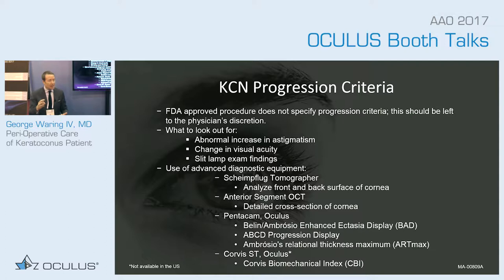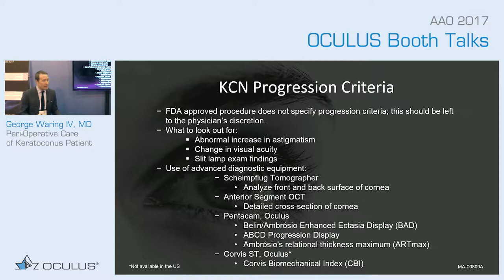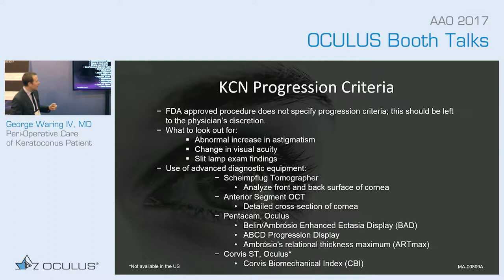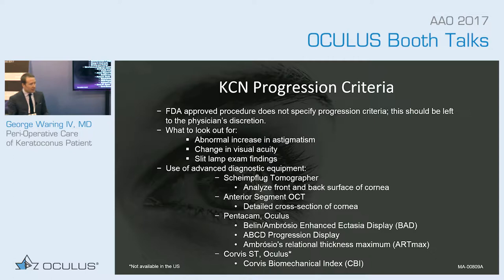We can do this with Scheimpflug tomographers where we can look at the front and back surface of the cornea from an elevation-based standpoint. We can also look at mathematically derived wavefront data on corneal wavefront based on coma — tracking the increase in coma over time. Anterior segment OCT is very useful, particularly with high-resolution devices. With the Oculus Pentacam we now have advanced software including the Belin-Ambrósio Enhanced Ectasia display, or BAD display, that helps assess risk for development or progression of keratoconus, and the ABCD progression display.